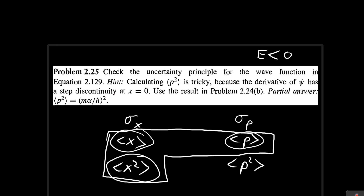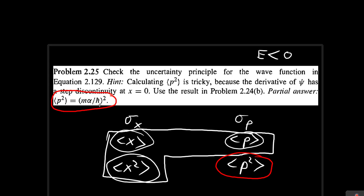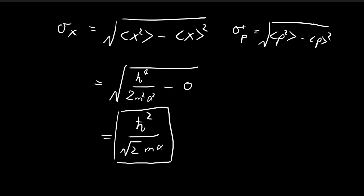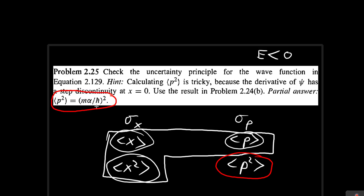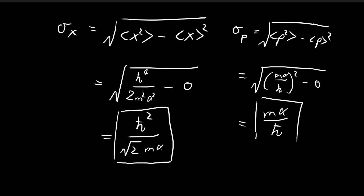At this point, we've already been given what the expected value of p² is. I'm going to prove how to obtain this result in the next video, but since it's given to us we can go ahead and find the standard deviation of momentum. With ⟨p⟩ = 0 and the given ⟨p²⟩, substituting in gives σ_p = mα/ℏ. That is the standard deviation of momentum.